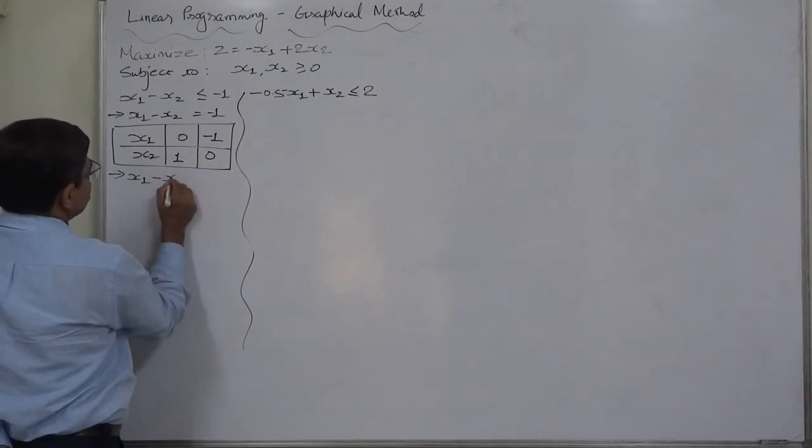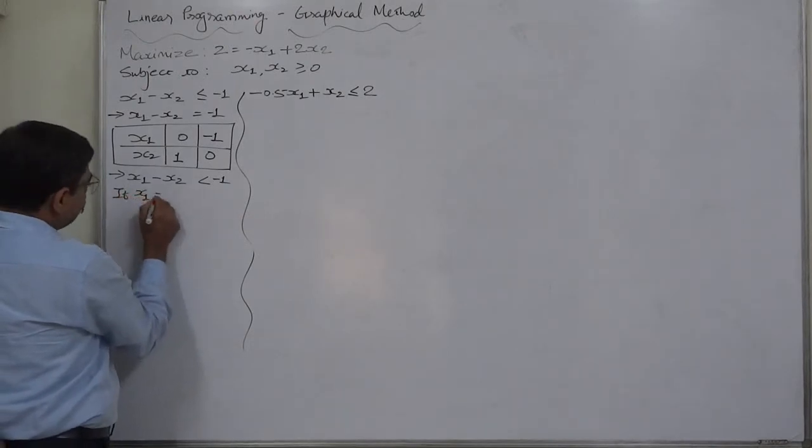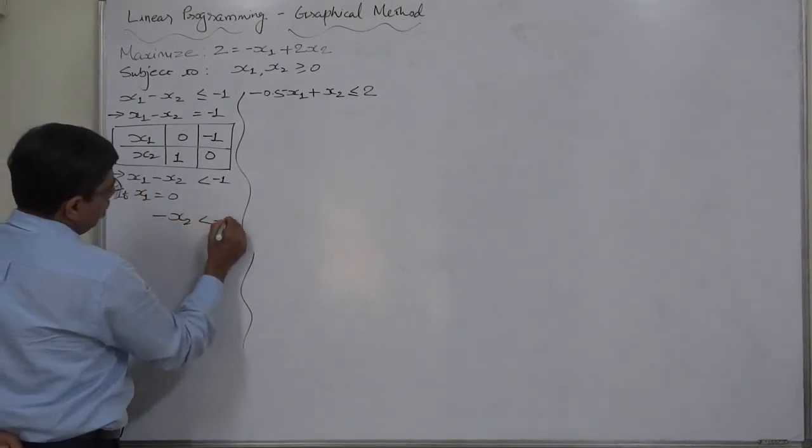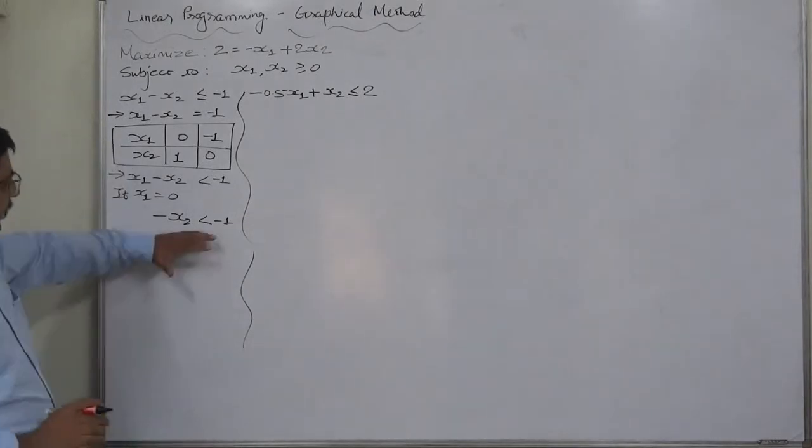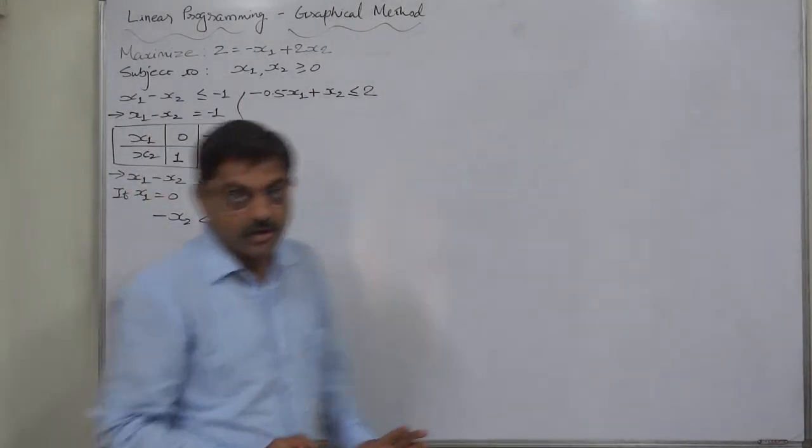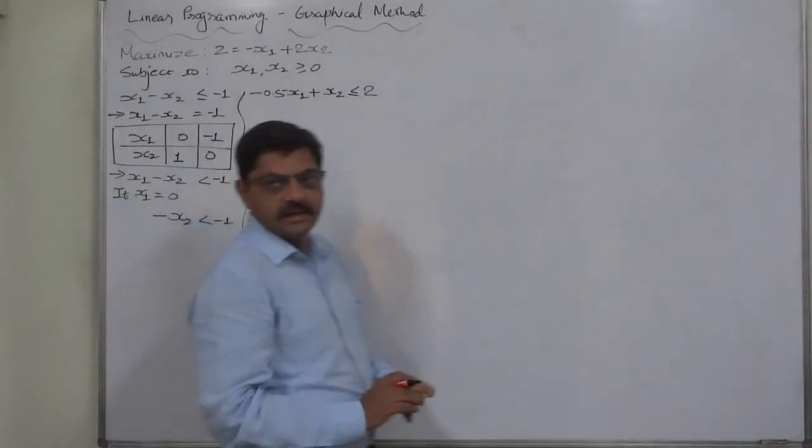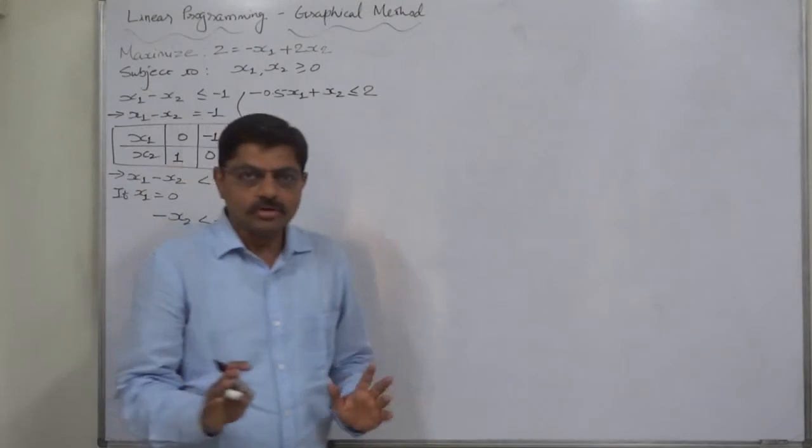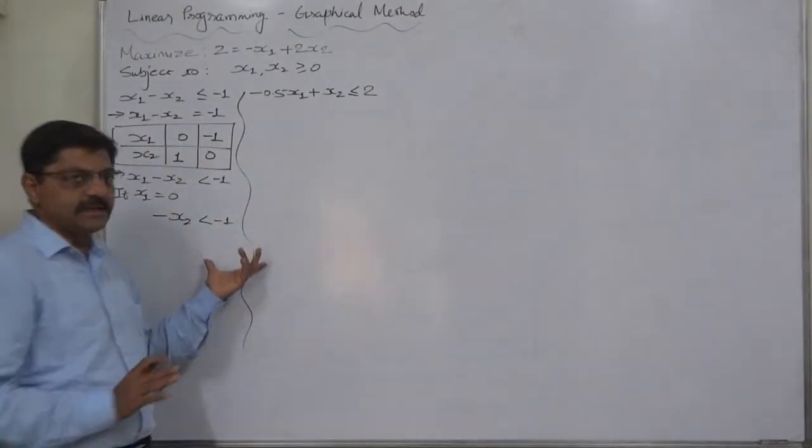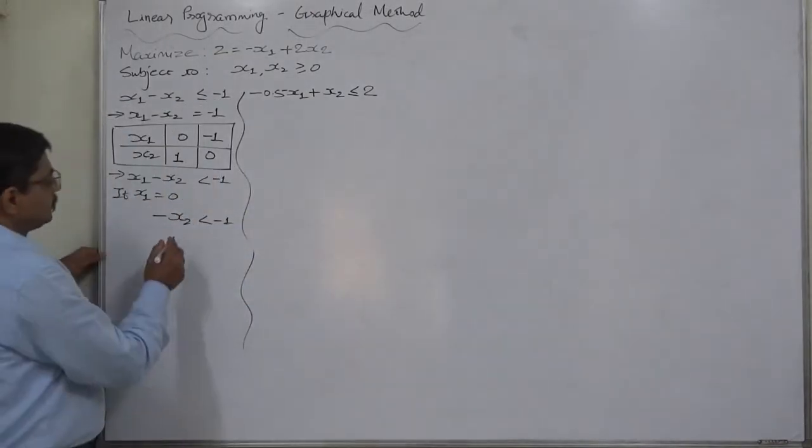Now it is drawn of inequality part of the same constraint, x1 minus x2 less than minus 1. If x1 takes value 0, then it will be minus x2 less than minus 1. Be alert whenever there is negative sign in any of the steps. In the previous lecture, I had discussed a very weird or strange method of treatment of this kind of situation.